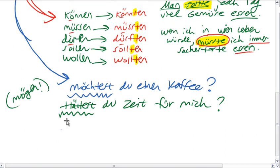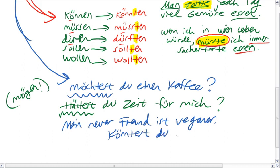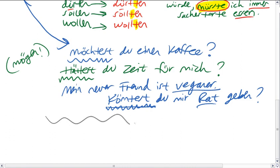Oder zum Beispiel, Mein neuer Freund ist Veganer. Könntest du mir Rat geben? So, my new boyfriend is a vegan. Could you give me advice? Say you're talking to a vegan friend or something. Anyway, this Könntest is more polite than saying, Kannst du mir Rat geben? Although both can be said, Könntest du is just simply better. Especially in circumstances where you don't know somebody that well. Is this making sense?